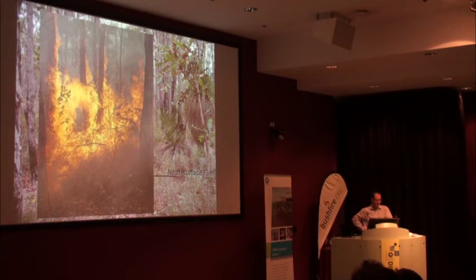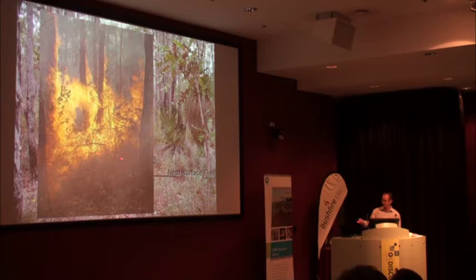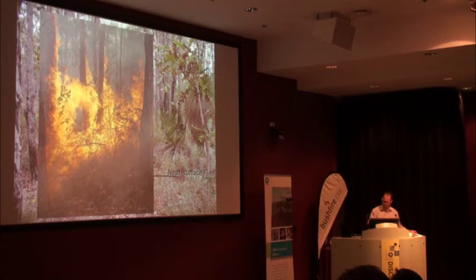If we consider how that actually burns — this is a fire just burning under moderate fire danger conditions — we can clearly see that the near-surface fuel and the upper parts of the surface fuel are the main layers actually supporting the fire spread. The role of the bark here really is as a ladder fuel, extending the flames up the trunks of the trees.